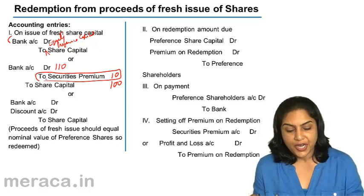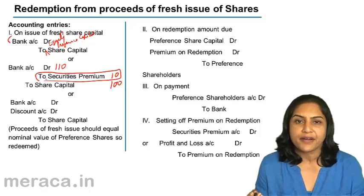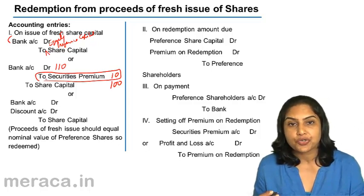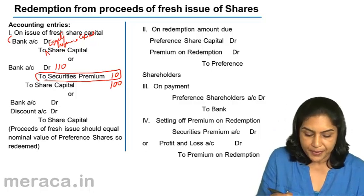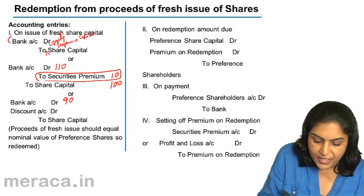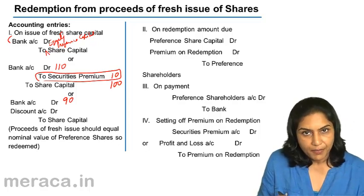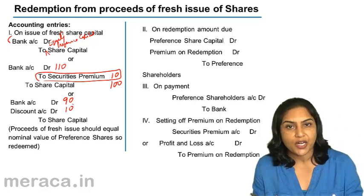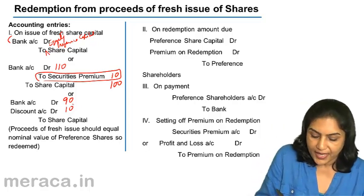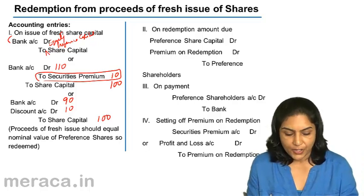If shares are issued at a discount, that means a 100 rupee share is being issued for 90 rupees, this is a loss for the company. The money received in the bank is only 90. So, bank account is debited with the amount received and discount account is debited with the amount of discount and loss, then credited to share capital. Share capital is always credited with the face value.